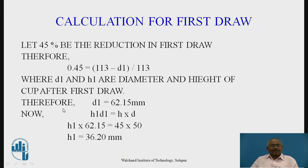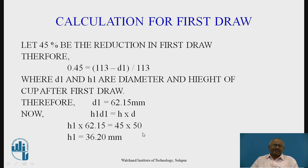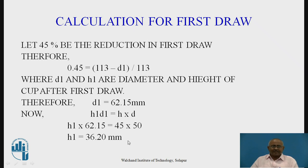By the constant volume relationship, H1 = H1, where H1 is the height of the cup after the first draw and H and D are the height and diameter of the cup in the second draw. Therefore, H1, the height of the cup after the first draw, is 36.20 mm.